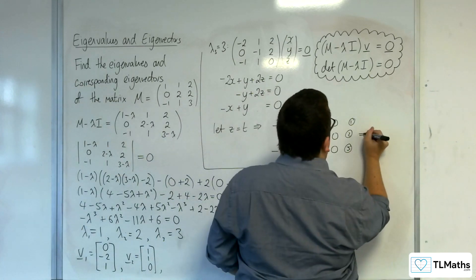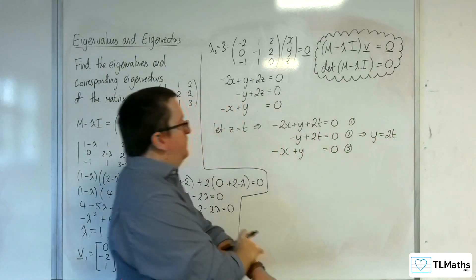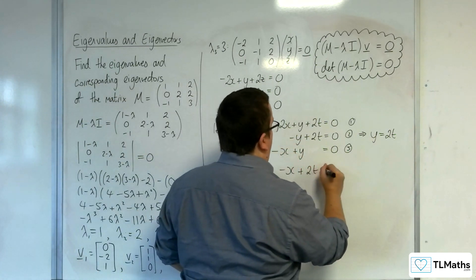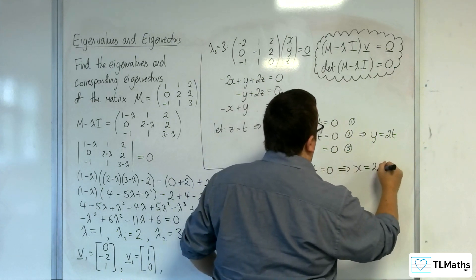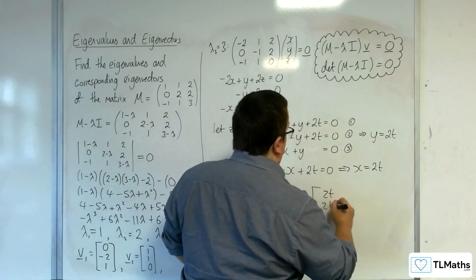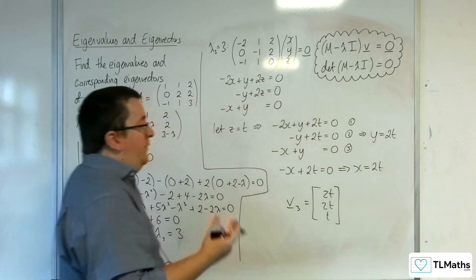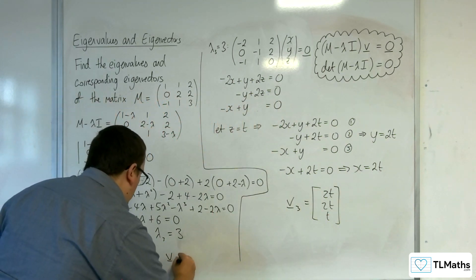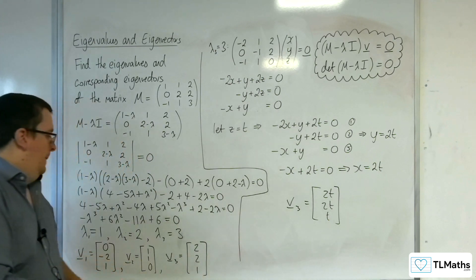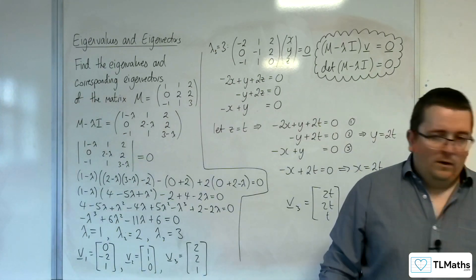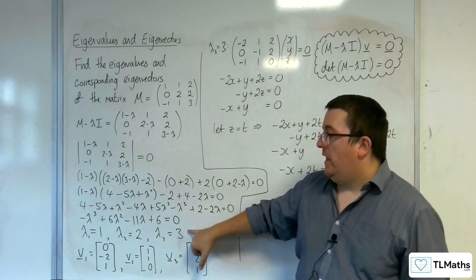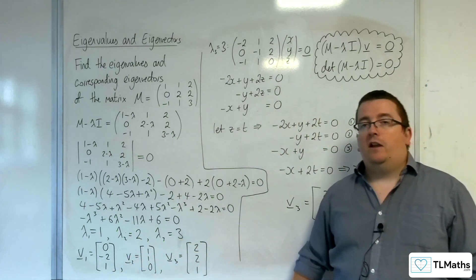From equation 2, y = 2t. Substituting into equation 3: -x + 2t = 0, so x = 2t. The eigenvector has the form (2t, 2t, t). Setting t = 1, the third eigenvector is (2, 2, 1), corresponding to eigenvalue 3. So those are the three eigenvalues and their corresponding eigenvectors.